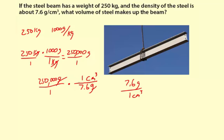So it's going to be 250,000 cubic centimeters per 1 times 7.6, or 7.6. Remember, the grams already simplified out, so there are no units there. So what we need to do is divide 250,000 by 7.6, and that will give us our volume.